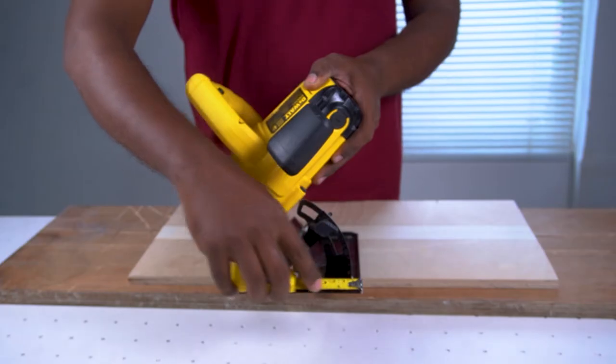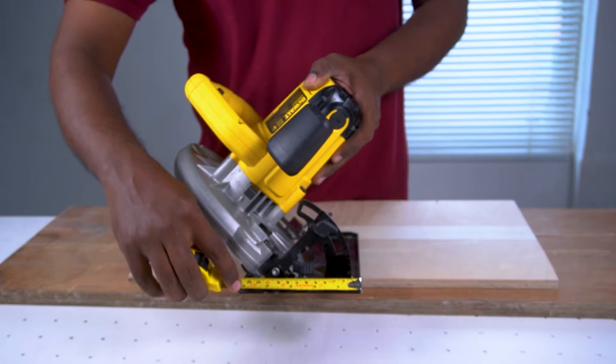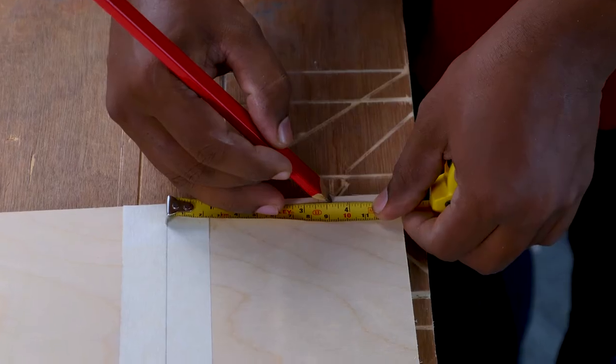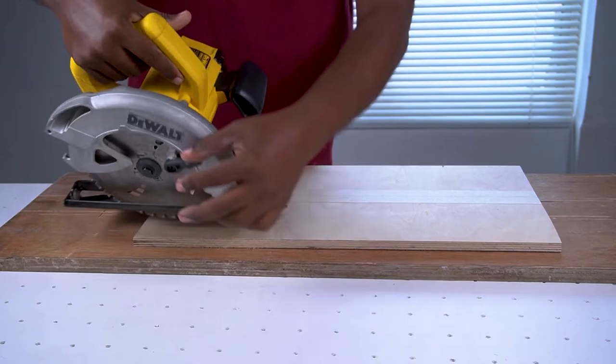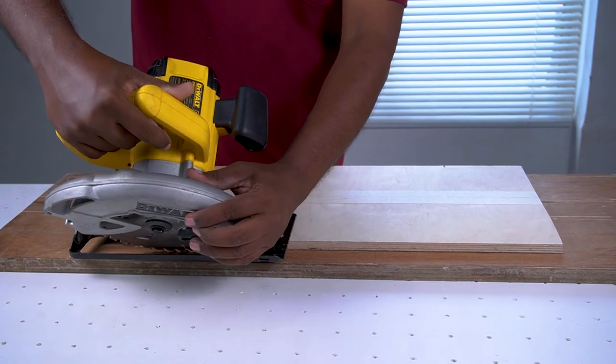First measure the offset of the saw blade from the edge of the base plate. Transfer the offset onto the plywood using the edge of the wood as a reference. Set the blade depth.